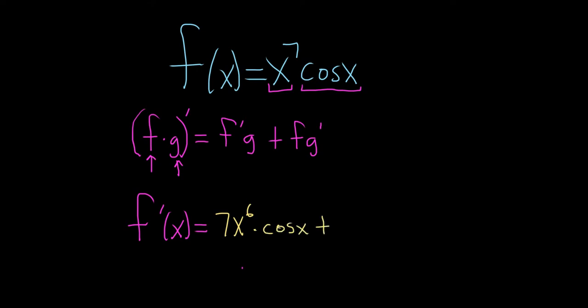Plus the first, which is x to the 7th, times the derivative of cosine, and the derivative of cosine is negative sine.